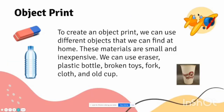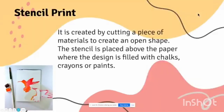Next, we have object print. To create an object print, we can use different objects that we can find at home. These materials are small and inexpensive. We can use a razor, plastic bottle, broken toys, fork, cloth, and old cup.